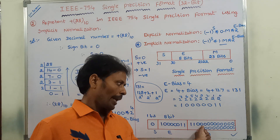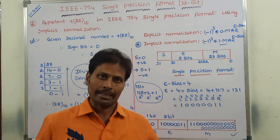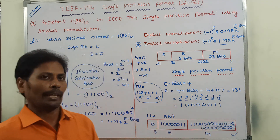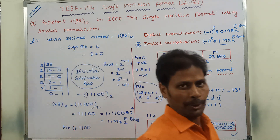The zeros are added at the LSB side. Thank you.